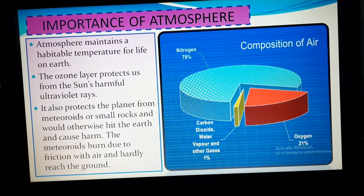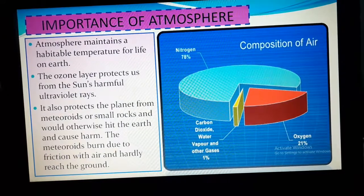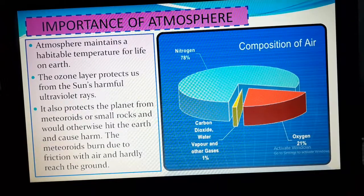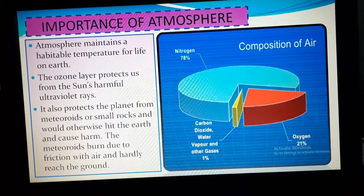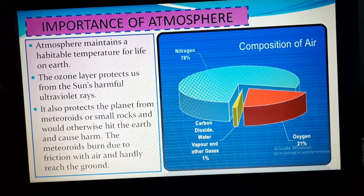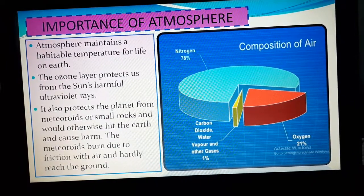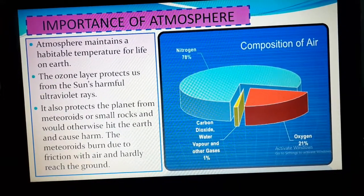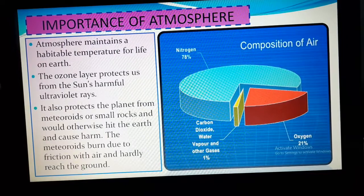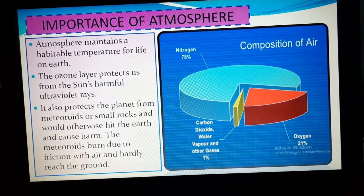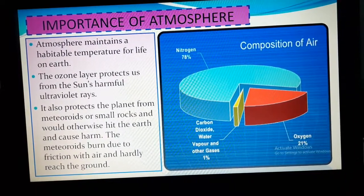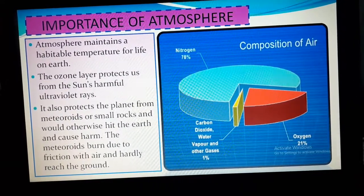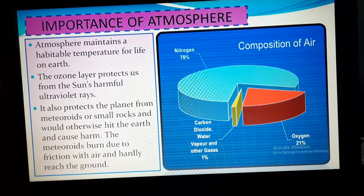What does the atmosphere do? The atmosphere has air — it has different types of gases. You have already learned about frictional force. Whenever the meteoroids come inside our atmosphere, there is friction between those small rocks or meteoroids and the gases of the atmosphere. Due to this friction, the meteoroids burn out before reaching the ground of the earth. That is why they cannot cause much harm to our earth.